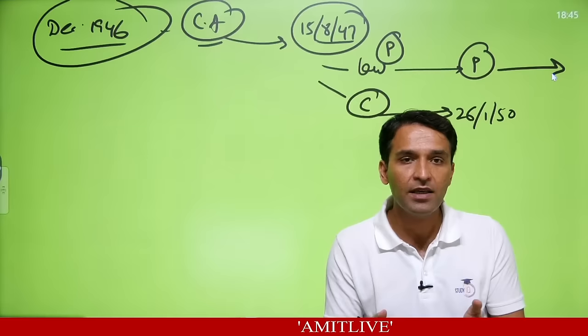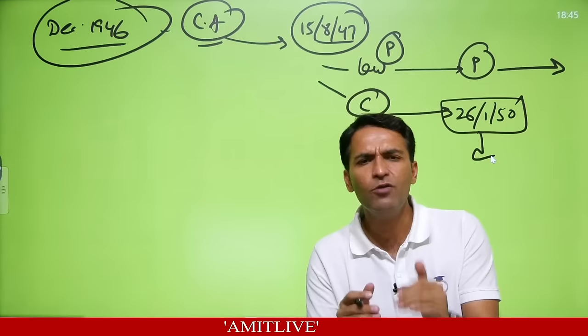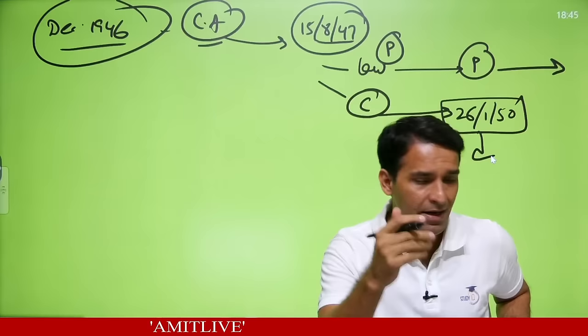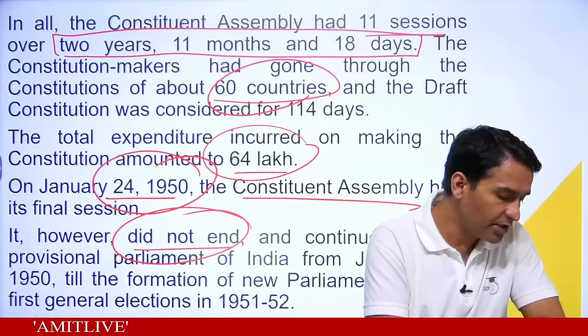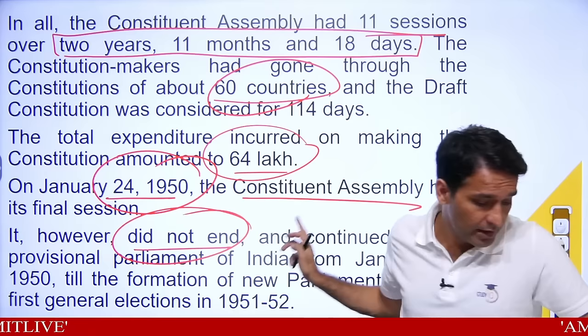Till the formation of the new parliament in 1952, the Constituent Assembly continued as parliament. Elections started in 1951 and lasted till 1952. Now coming to the committees: the 299 members worked in different committees. The Union Powers Committee was led by Jawaharlal Nehru; the Union Constitution Committee was led by Jawaharlal Nehru; the Provincial Constitution Committee was chaired by Sardar Patel.